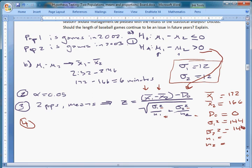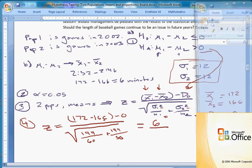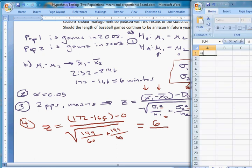My value of Z is going to be 172 minus 166 minus 0 over the square root of 144 over 60 plus 144 over 50. Easy enough to calculate. The top is going to be 6. The bottom is a little bit harder, but I can bust out Excel. It's going to be equal the square root of 144 divided by 60 plus 144 divided by 50. Excel will do that for me. It's 2.29.